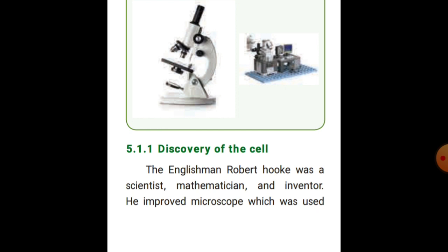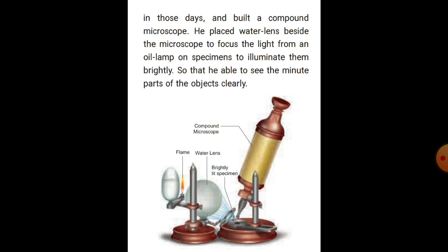The Englishman Robert Hooke was a scientist, mathematician and inventor. He improved the microscope which was used in those days and built a compound microscope. He placed a water lens beside the microscope and focused the light from an oil lamp on specimens to illuminate them brightly. He was then able to see the minute parts of objects clearly, and he improved his techniques using this method.